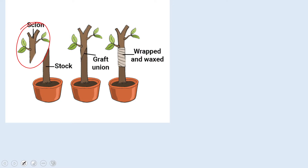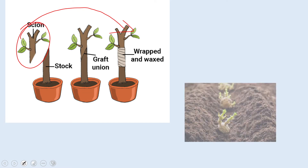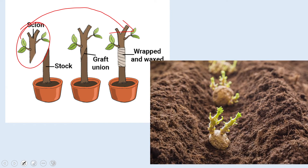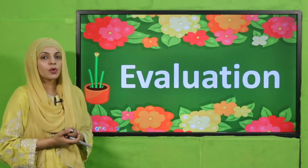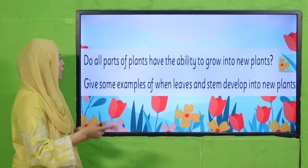This is grafting — you take a section and put it on another stem, and when they join together, the new plant then grows from that. These are potato buds, and they have the ability to grow into a new potato plant.